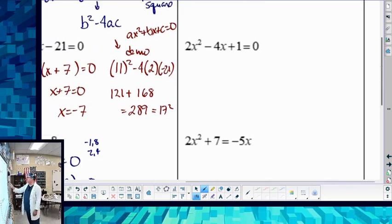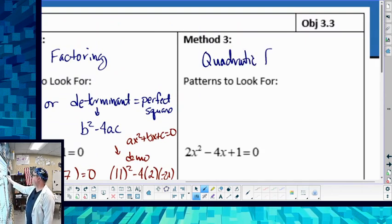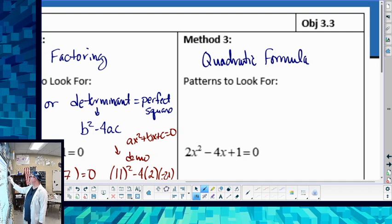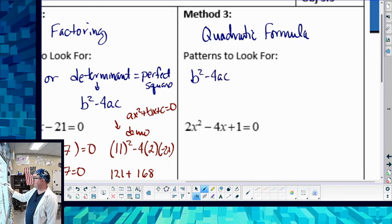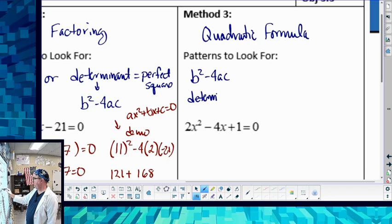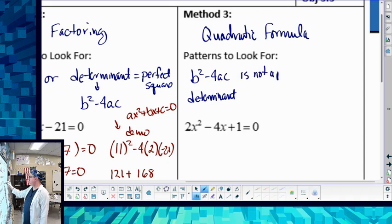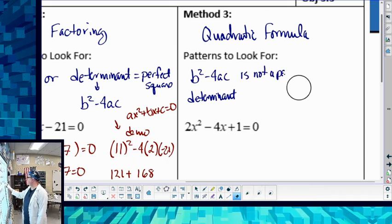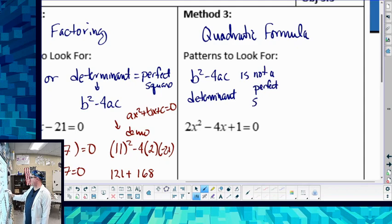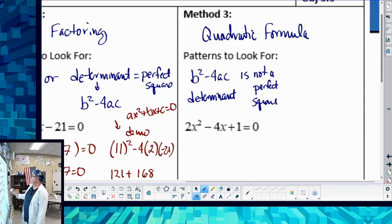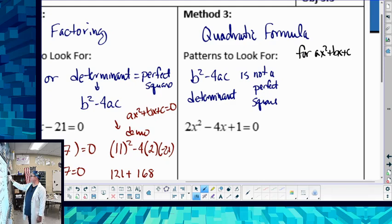Last one, quadratic formula. Under patterns to look for, b squared minus 4ac, your determinant is not a perfect square. I'm going to put the quadratic formula up there. And again, this is something you should know. You learned it back in algebra 1. So again, for ax squared plus bx plus c equals 0, x is going to equal the opposite of b plus or minus the square root of b squared minus 4ac all over 2 times a.